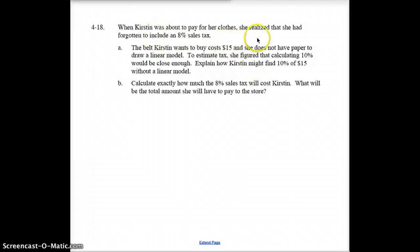When Kirsten was about to pay for clothes, she realized that she had forgotten to include the tax, 8% tax. The belt she wants to buy costs $15, and she does not have paper to draw a linear model. To estimate, she figures that calculating 10% would be close enough. Explain how Kirsten might find 10% of $15, so please write that out. Now, what would 10% of $15 be? Please write that down here. Now, to calculate exactly how much 8% will cost, what will be the amount that she'll have to pay at the store? So, she's not going to pay 10%. She's going to pay 8%. Figure out what 8% is of $15.